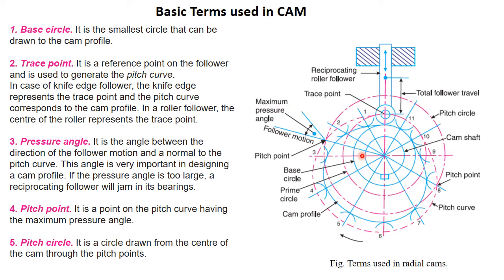The first term is the base circle. The base circle is the smallest circle drawn to the cam profile. We do not first draw the cam profile and then the circle; instead, we first draw the base circle and then define the cam profile according to the desired motion based on this base circle. It is important to define the base circle diameter before designing the cam profile.